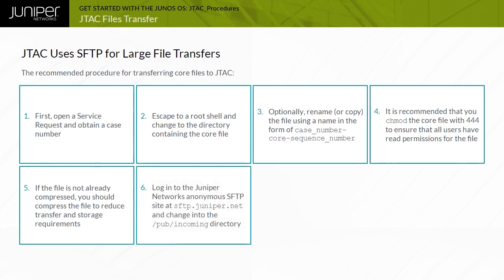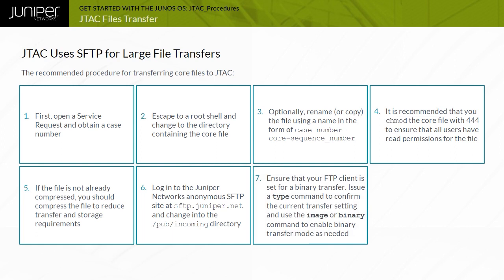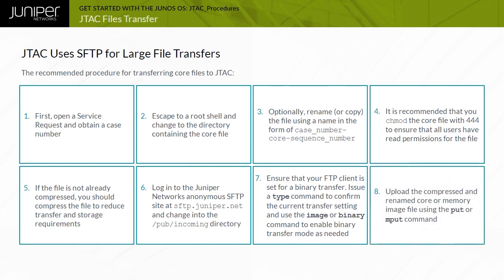Step 6: Log in to the Juniper Networks anonymous SFTP site at sftp.juniper.net and change into the /pub/incoming directory. Step 7: Ensure that your FTP client is set for binary transfer — in many cases the client defaults to the correct transfer type. Issue a type command to confirm the current transfer setting, and use the image or binary command to enable binary transfer mode as needed. Step 8: Upload the compressed and renamed core or memory image file using the put or mput command.